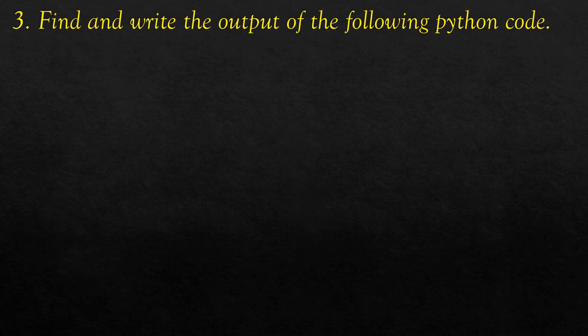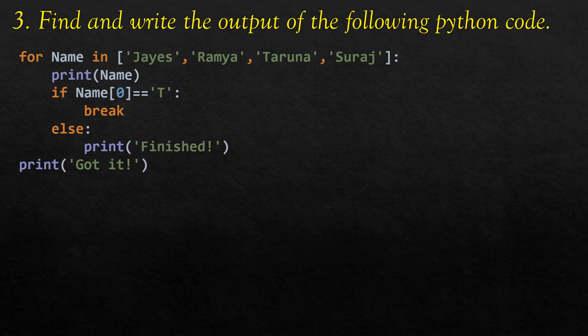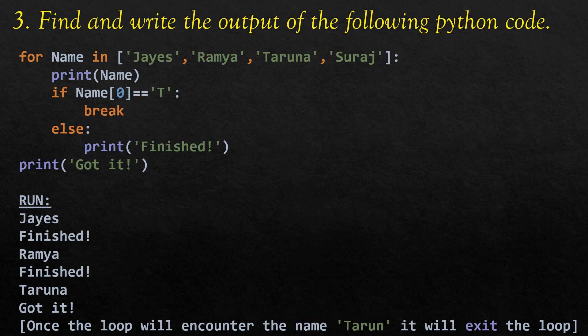The next question asks to find the output. For name in a list of names: print name; if name[0] == 't' then break, else print 'finished'. Finally print 'got it'. Jays doesn't begin with t so it prints 'finished'. Ramya also prints 'finished'. Taruna begins with t, so the loop breaks there and prints 'got it'.